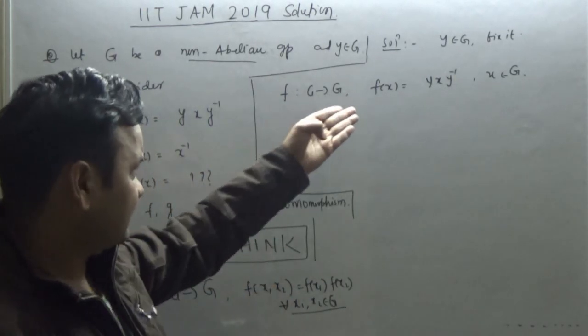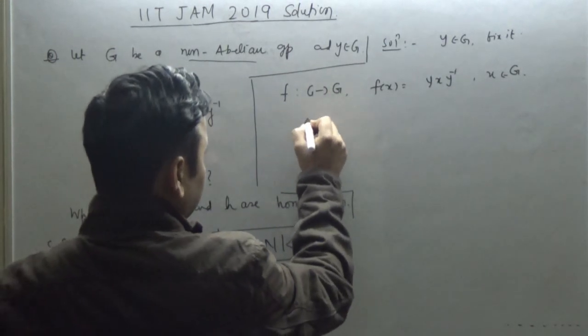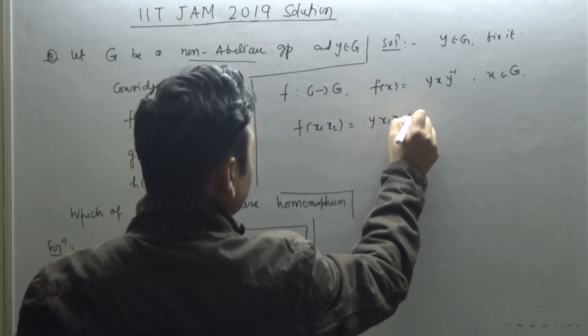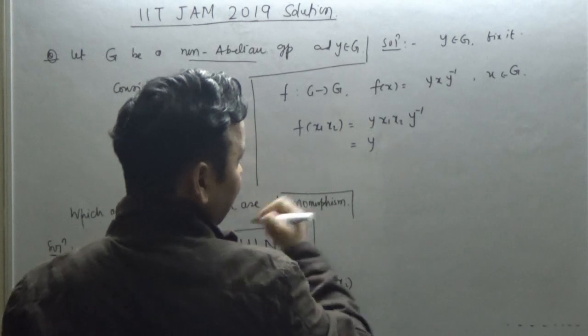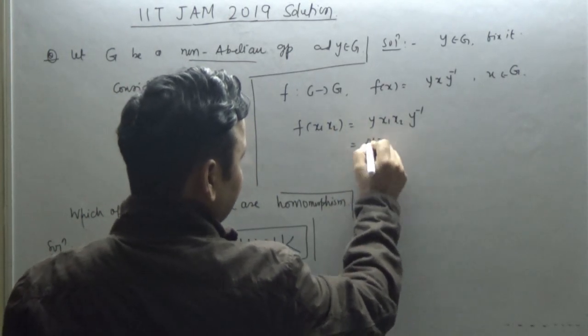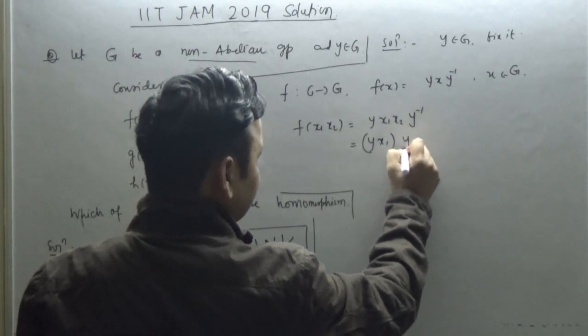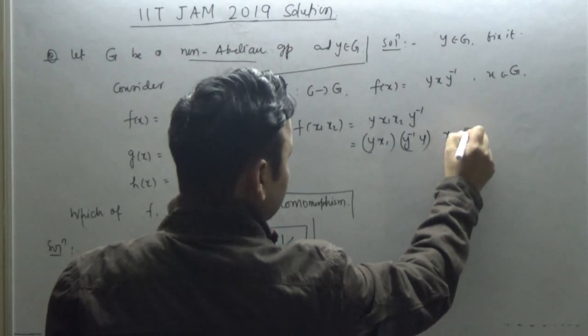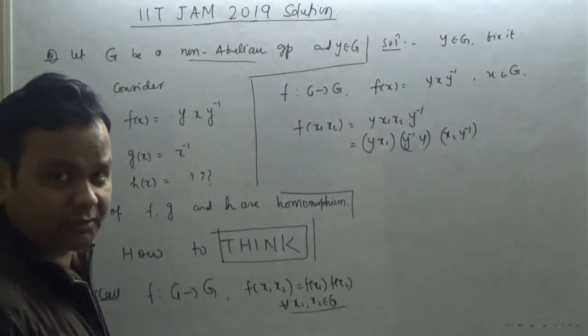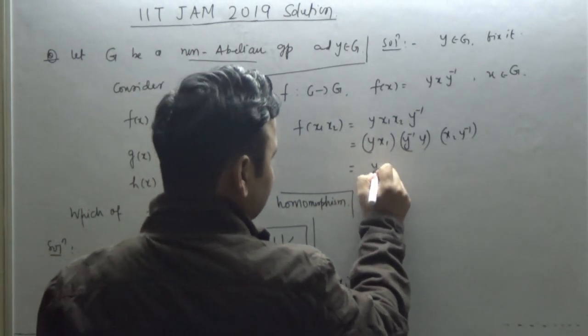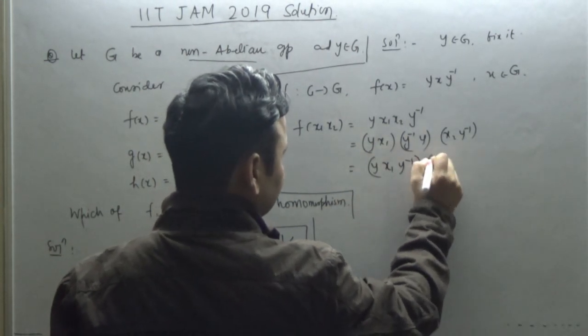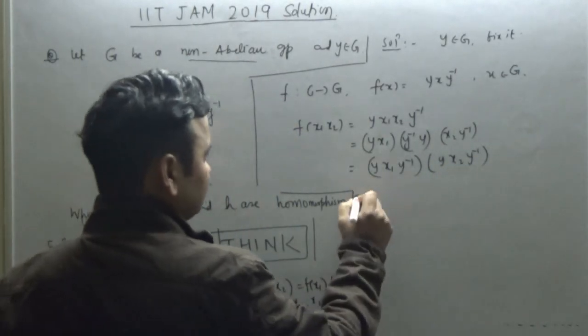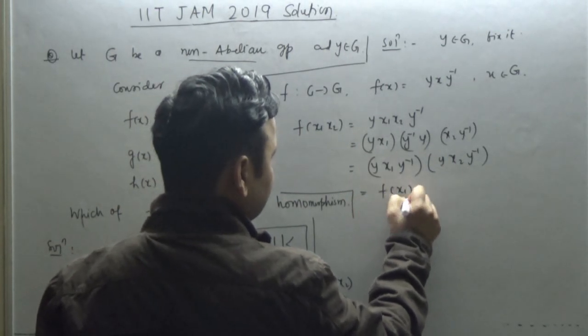Let's see if it preserves that. f of x1 x2 is y x1 x2 y inverse. Apply this: y x1, then apply y inverse y, and then x2 y inverse. I have used associativity law.